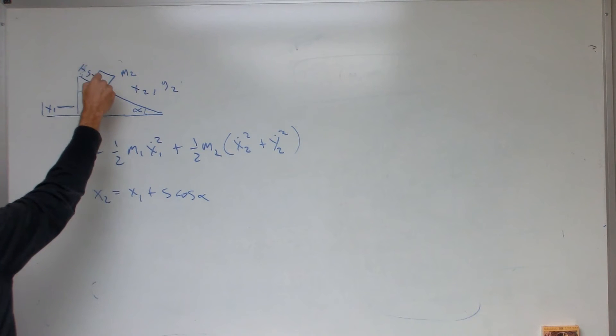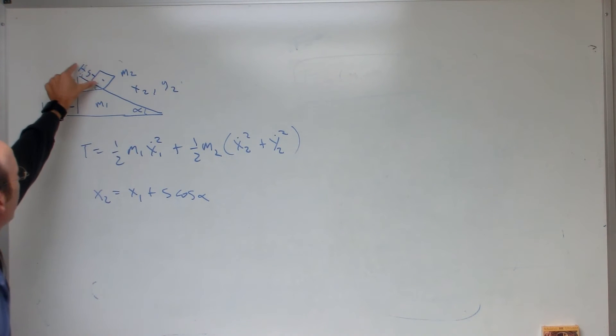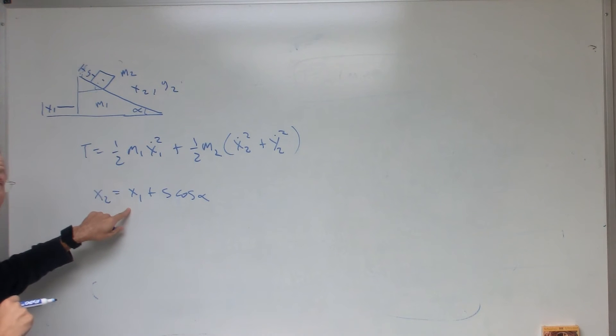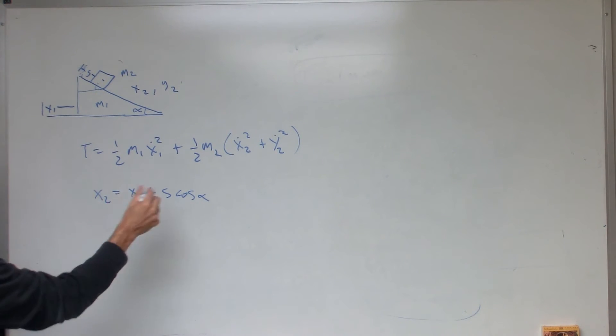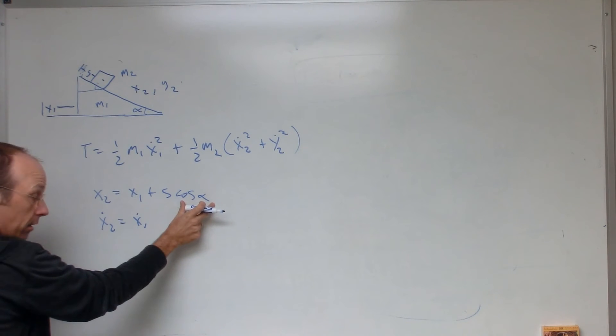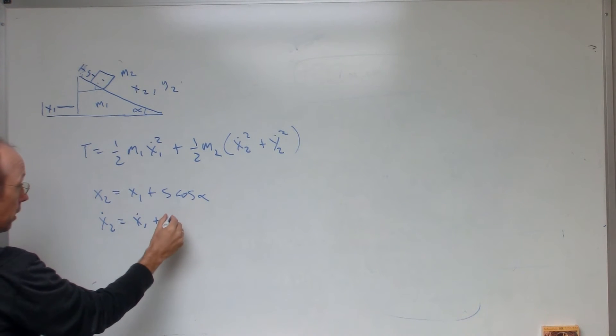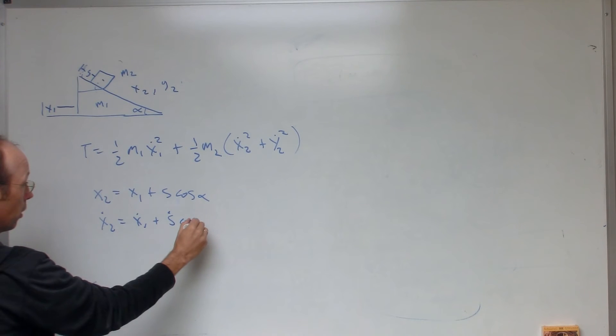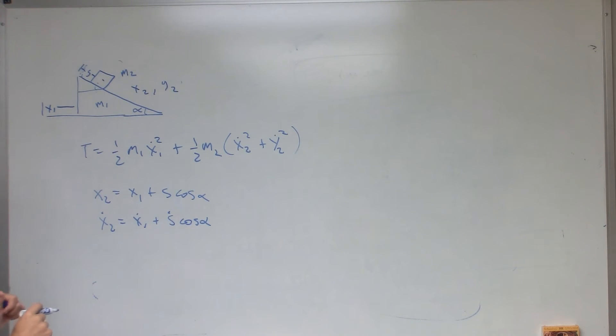because that's the angle alpha. If I know the value s, that's going to be s cosine alpha. So, that's my expression for x2. And then I can take the derivative, x2 dot. It's going to be x1 dot. Cosine alpha is a constant. So, I get plus s dot cosine alpha.